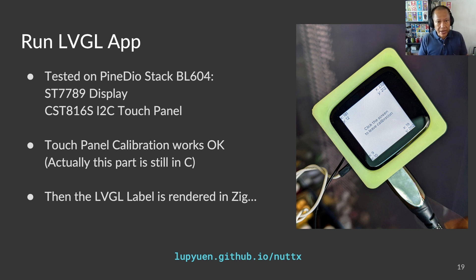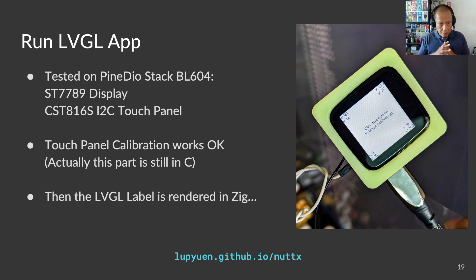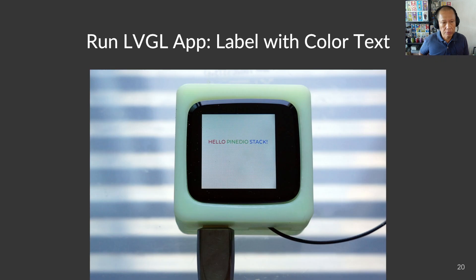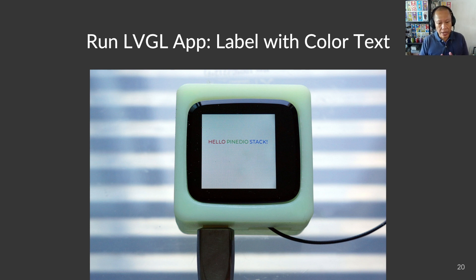We tested the Zig app on PineStack BL604. This gadget is based on the BL602 RISC-V SOC by Buffalo Lab. Check out my presentation on NuttX on a RISC-V IoT gadget, PineStack BL604. The app begins with touch panel calibration, which still runs in C because we haven't finished conversion to Zig. Then it calls our Zig code to render the label. We see the text label with the color text in red, green, and blue. Our LVGL app runs correctly on PineStack BL604.